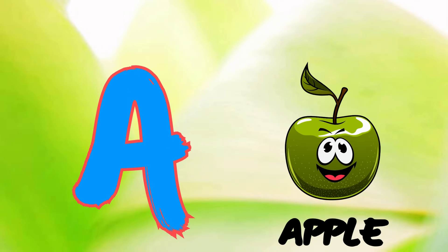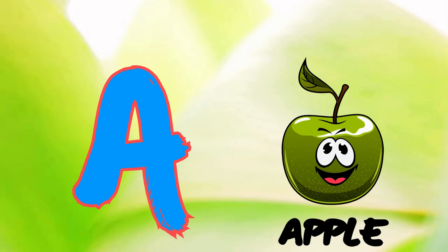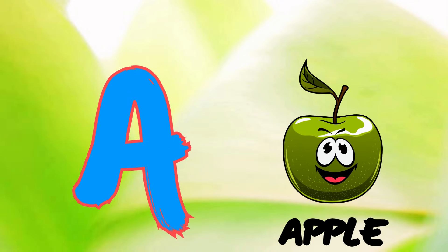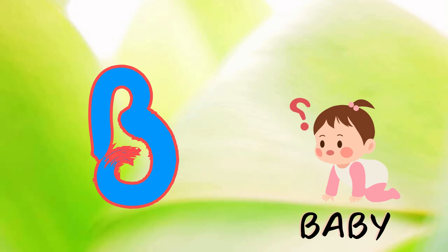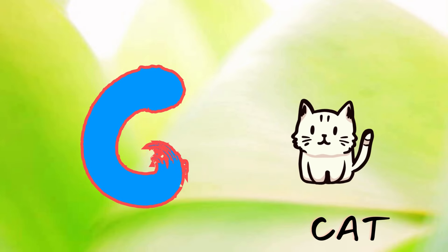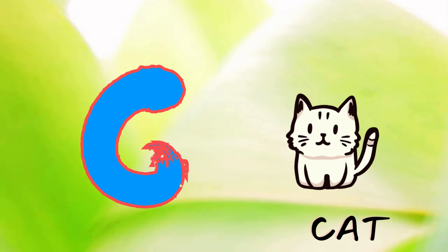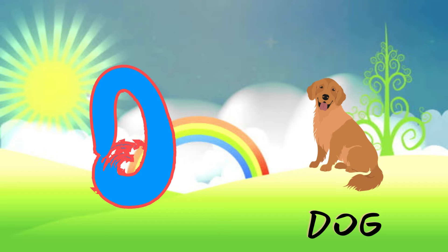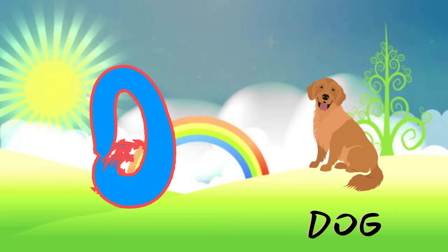A is for Apple. B is for Baby. C is for Cat. D is for Dog.